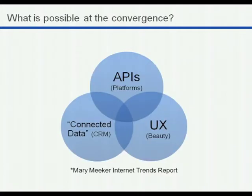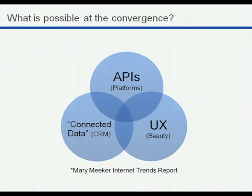I wanted to reproduce a concept presented by Mary Meeker — I'm sure everybody knows who she is, former research analyst for Morgan Stanley, now with Kleiner Perkins, really known for her Internet Trends report. In the latest report, she introduced the concept of three major paradigm shifts happening in the web currently and what's possible at the convergence. The shifts were: first, APIs — the proliferation of APIs, with new content-based APIs, social APIs, and functional APIs being introduced year to year.